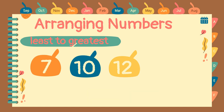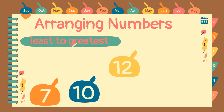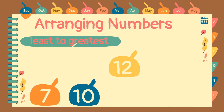And next, let's have the last example. Let's arrange numbers 7, 10, and 12 from least to greatest. Which one is the least number? Great job! Number 7 is the least number. How about the next number? Very good! Number 10. And the greatest number is number 12.